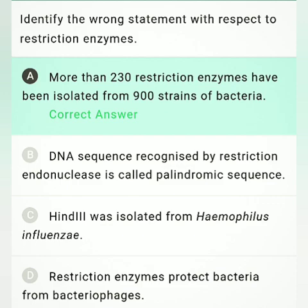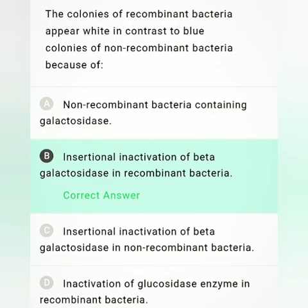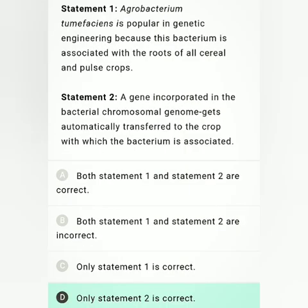The colonies of recombinant bacteria appear white in contrast to the blue colonies of non-recombinant bacteria. This is a memory-based question. Option B is the correct answer: insertion inactivation of beta-galactosidase in recombinant bacteria.